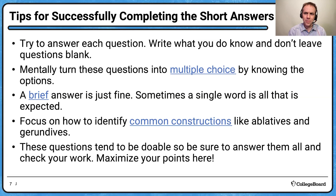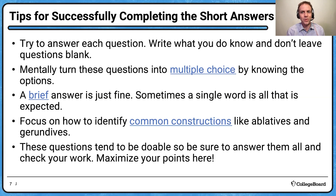If a question asks for a mood or a voice, think about what you know. For instance, a pluperfect subjunctive has -isse- in it — if you see that, write down 'pluperfect subjunctive.' For participles: if asked what tense a participle is and you recognize it as a present participle, just write that. Write what you know.